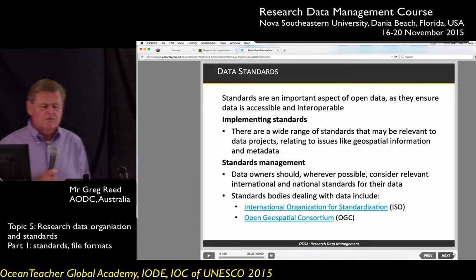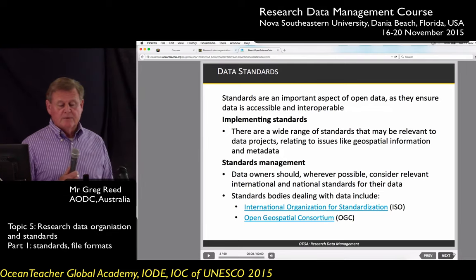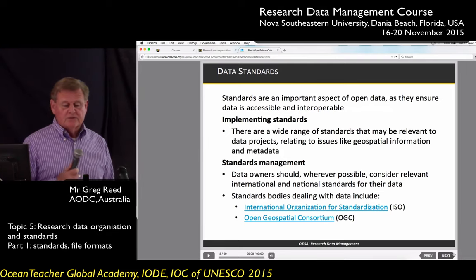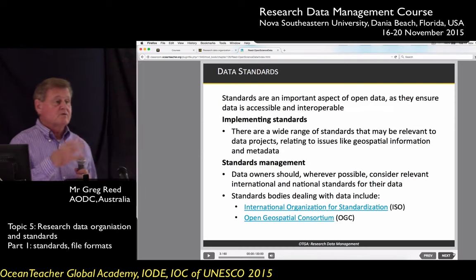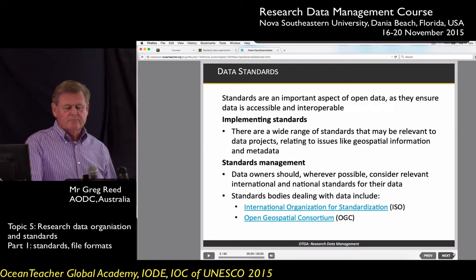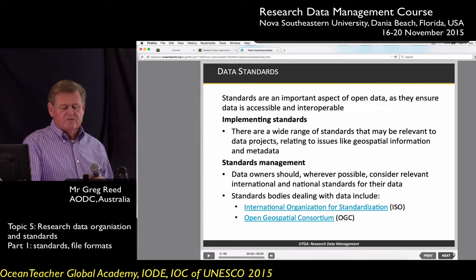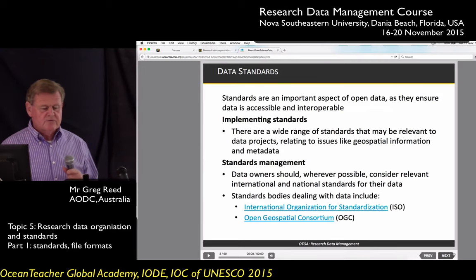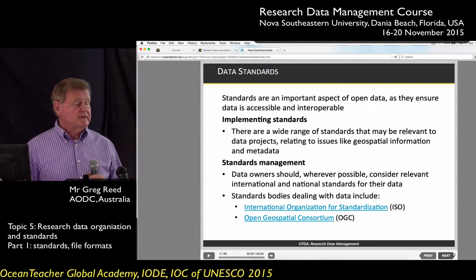First of all, data standards. Standards are really an important part of open data. They ensure that data is accessible and interoperable. So to have open data, we need to have these standards so we can share data and we know what we're sharing. First of all, there are implementation standards — a wide range of standards relevant to data projects relating to issues like geospatial information and metadata.